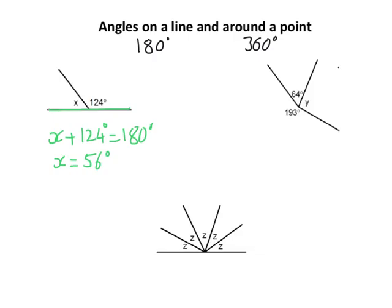Now with this second one, we've got angles around a point. Here's the point here, and we've got 193 plus 64 plus y has got to make 360.